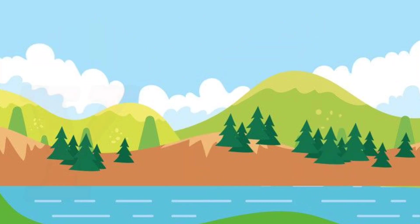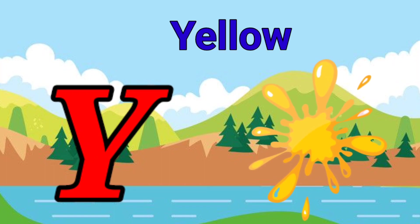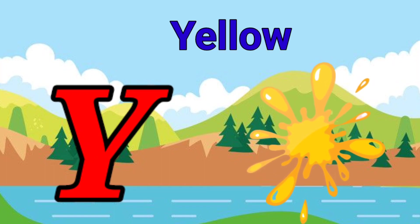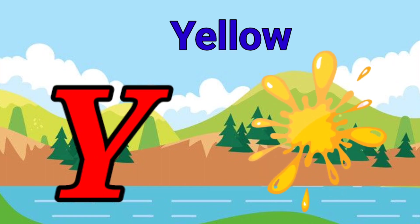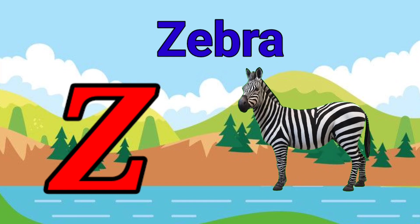Y is for yellow, ye-ye-yellow. Z is for zebra, z-z-zebra.